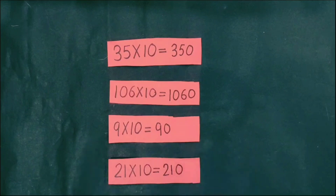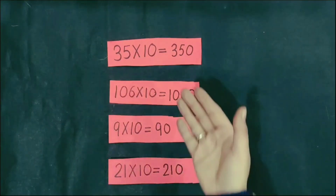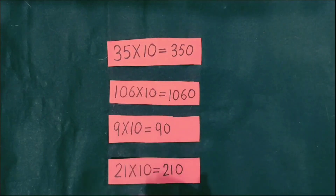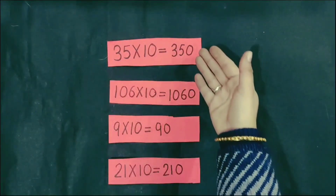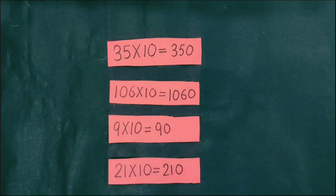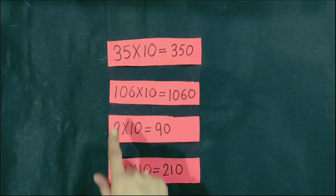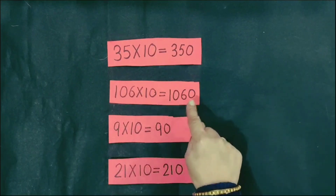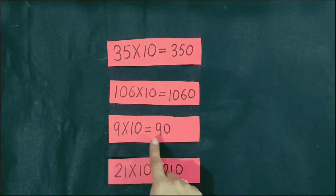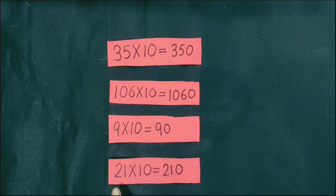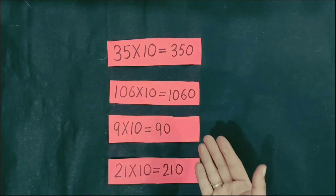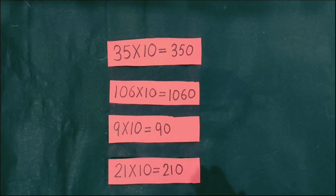Let's see another pattern related to numbers. In this pattern, numbers are multiplied by 10. In the first, 35 multiplied by 10, and in the answer, 0 is at the end of 35. Next, 106 multiplied by 10, and in the answer, 0 is at the end of 106. Next, 9 multiplied by 10, and in the answer, 0 is at the end of 9. In this pattern, we observe that when a number is multiplied by 10, we put 0 at the end of the given number.